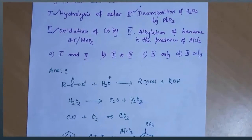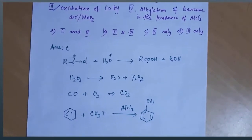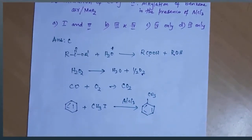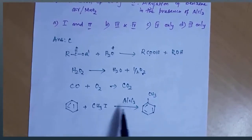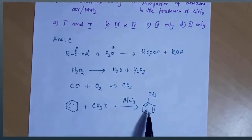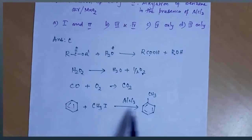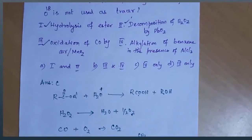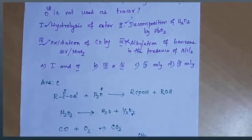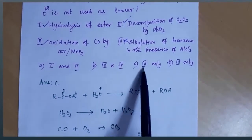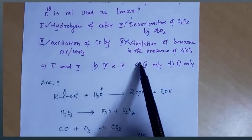The fourth reaction is alkylation of benzene in the presence of aluminium chloride — the well-known Friedel-Crafts reaction to give toluene. Here, oxygen cannot be used as a tracer, since no oxygen is involved in the reaction. So in the fourth option, oxygen cannot be used as a tracer. Your answer is option C — the fourth reaction only.